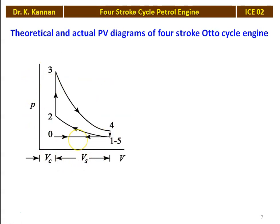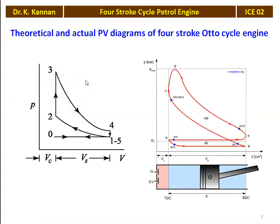But practically, we cannot open the valve exactly at the top dead center, or admit the air-fuel mixture or expel the burnt gases without any pressure difference. So there is a deviation from the theoretical P-V diagram. The actual P-V diagram of the petrol engine looks like this — for the four-stroke cycle petrol engine or Otto cycle engine.